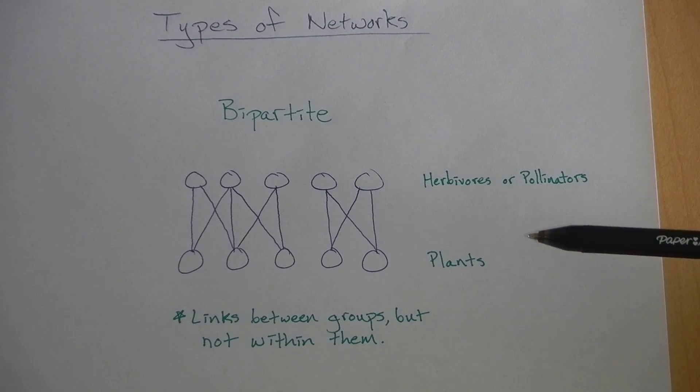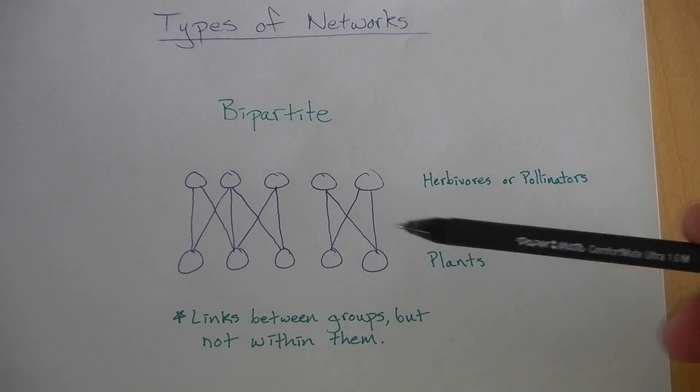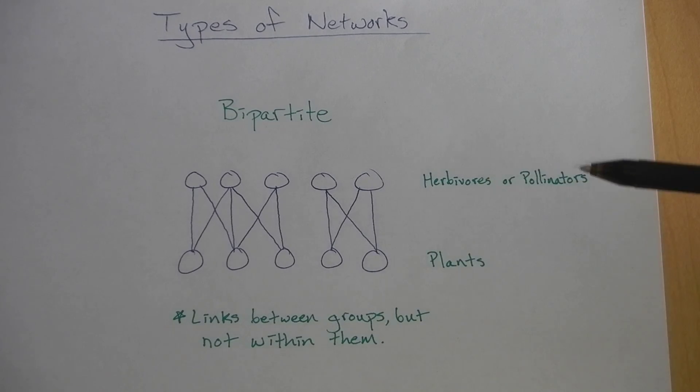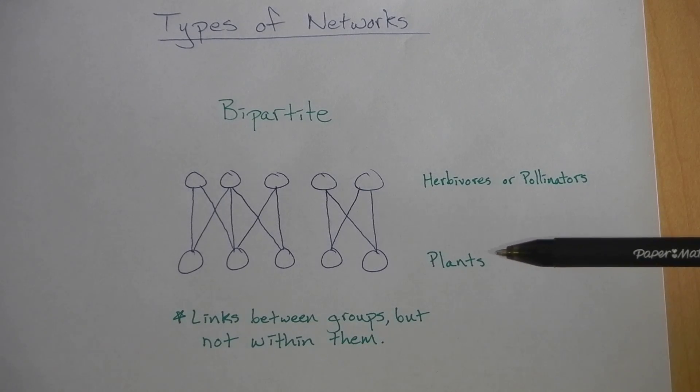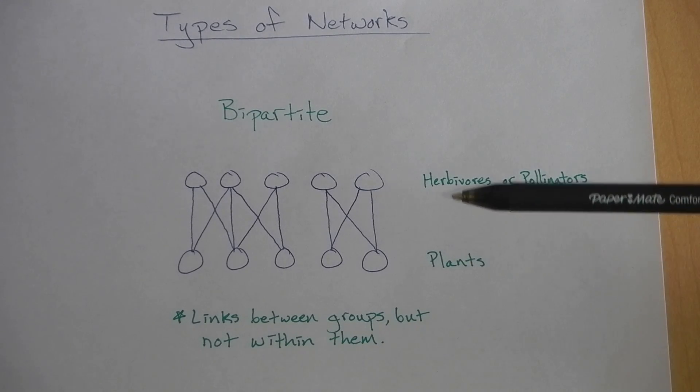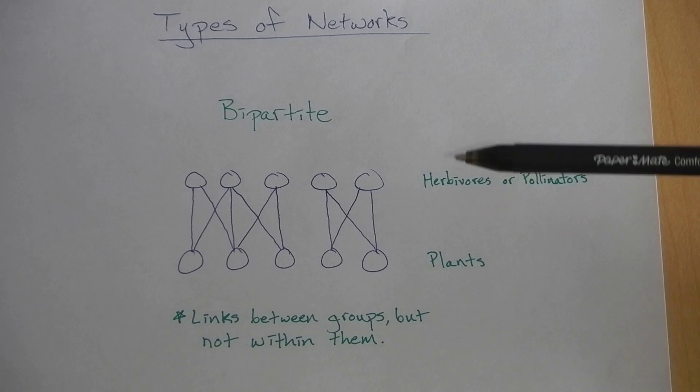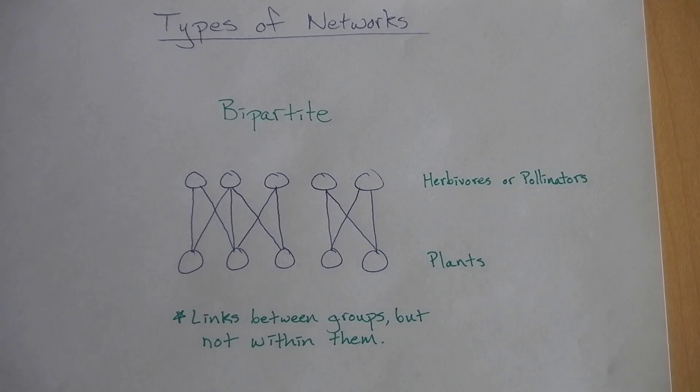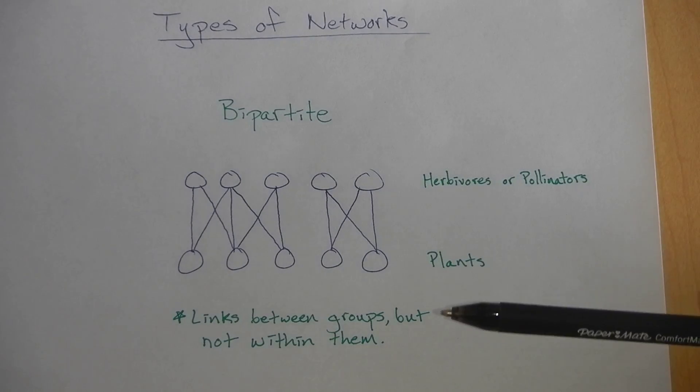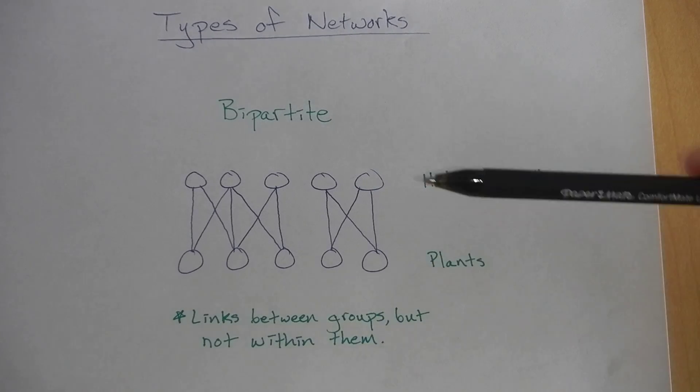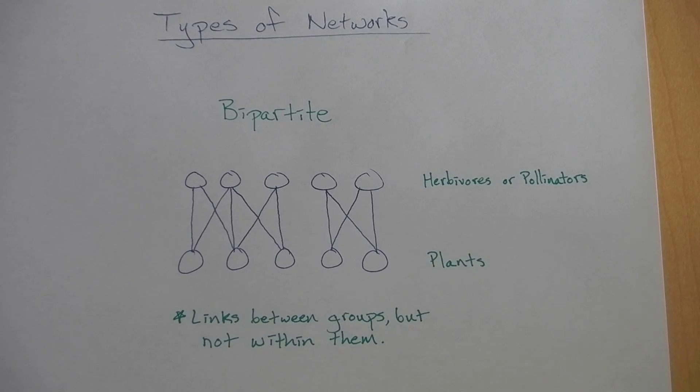Often you'll see a basal group, such as a group of different plant species, and then herbivores or pollinators. But this could also represent herbivores and parasitoids or particular predators—any sort of interaction where you can distinctly make two different groups.